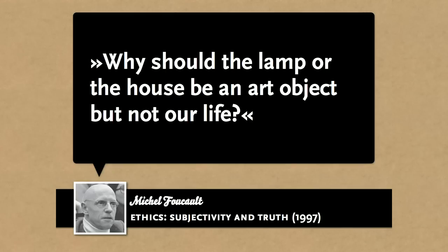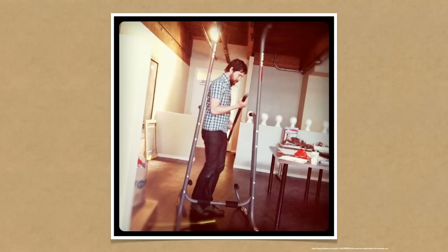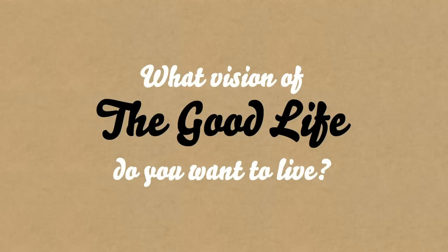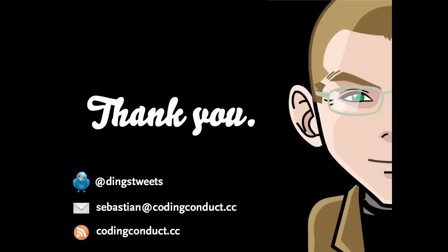Why should the lamp or the house be an art object, but not our life, as Michel Foucault puts it? Just to give you a practical example: Buster Benson is here setting up a pull-up machine at the office of his new startup, Habit Labs, where they're trying to build applications like Health Month for people. And why is he building a thing like this? Here is the set of axioms that Habit Labs put up for themselves on how they wanted to work together as a team when building these applications — a set of moral principles for working together. One of them being: we take care of our own health and manage our own burnout. Because ultimately, how can you find an answer on what vision of the good life you want to convey with your designs without asking the question, what vision of the good life do you yourself want to live? And with that, I thank you.